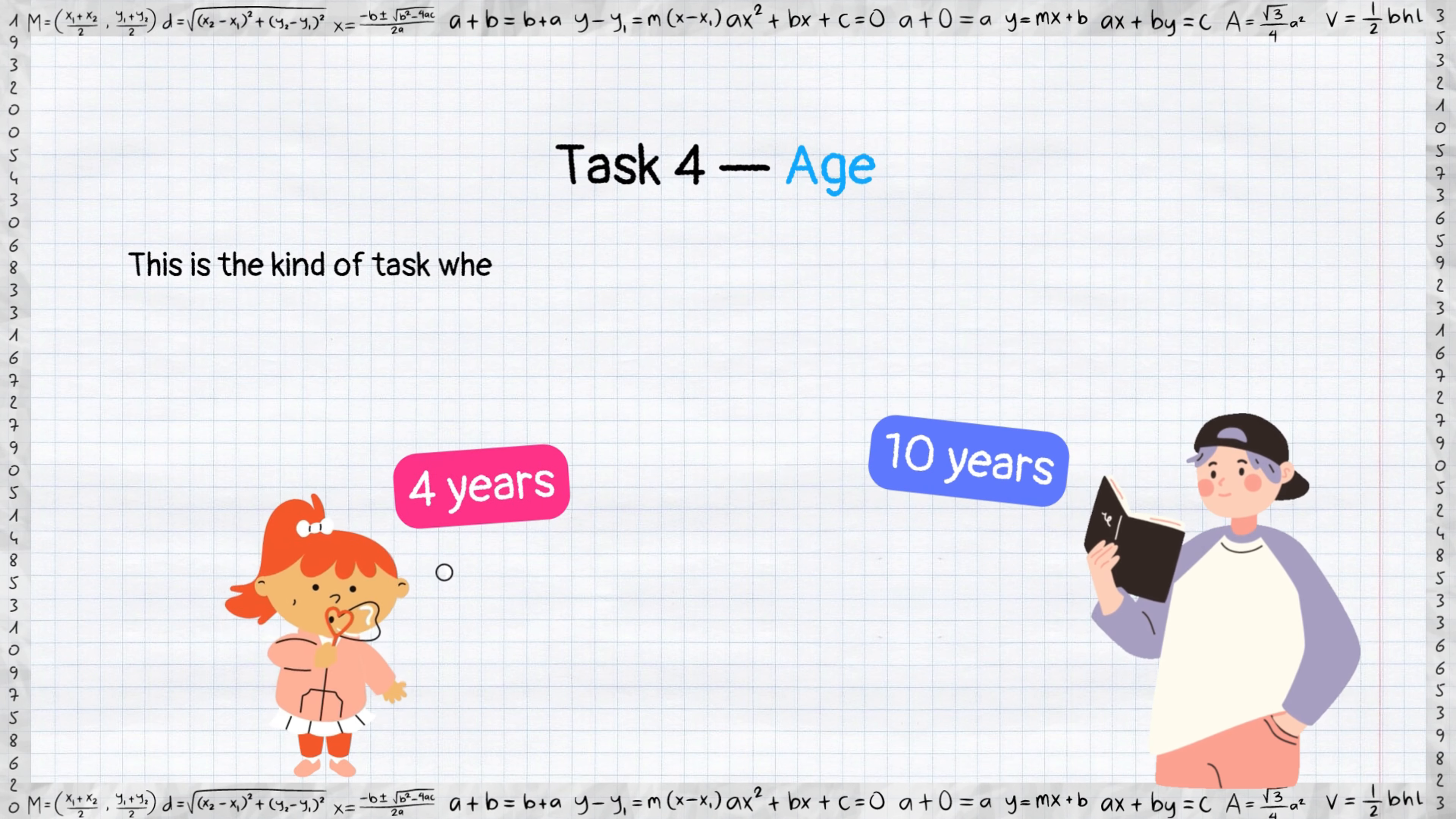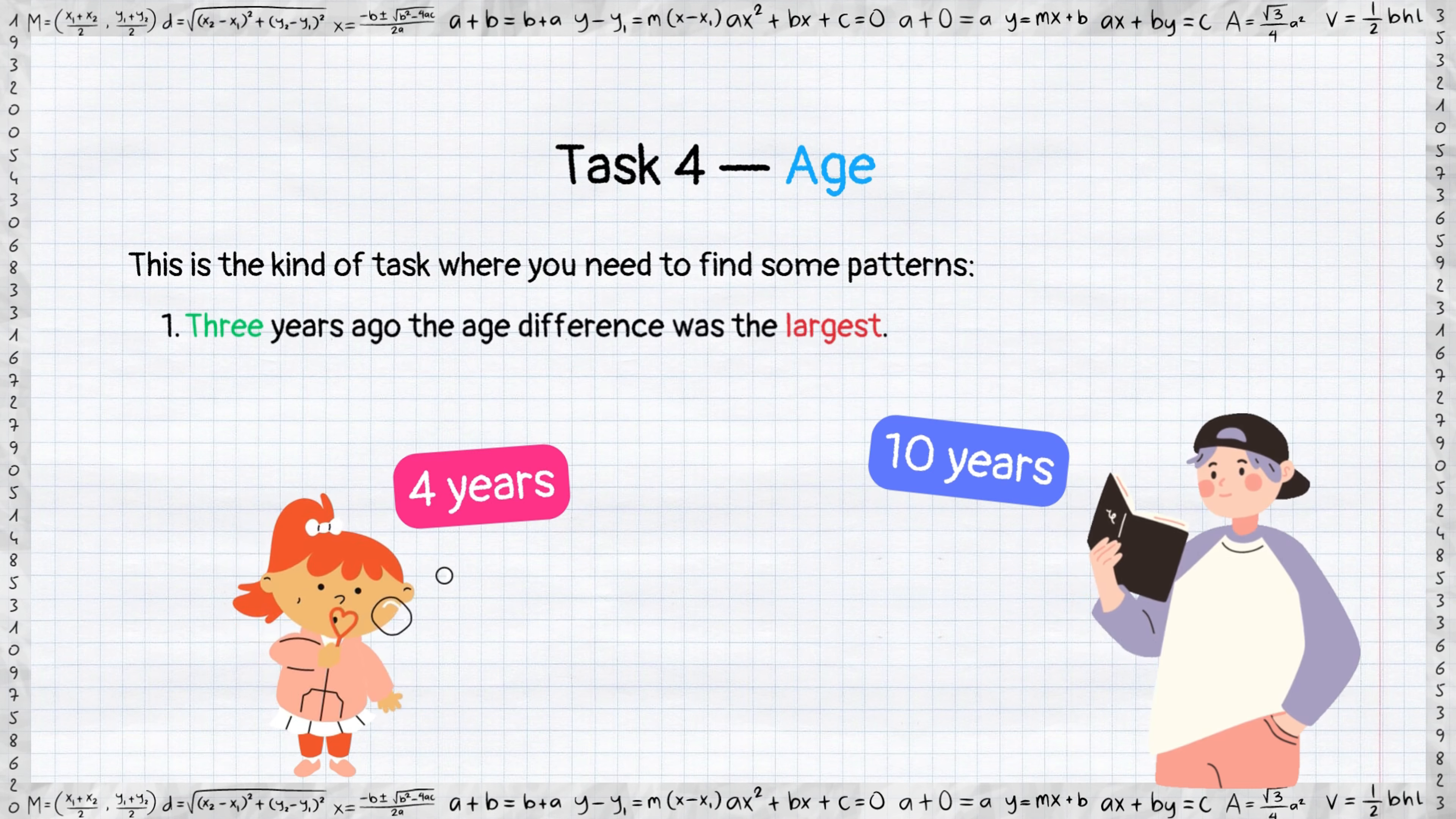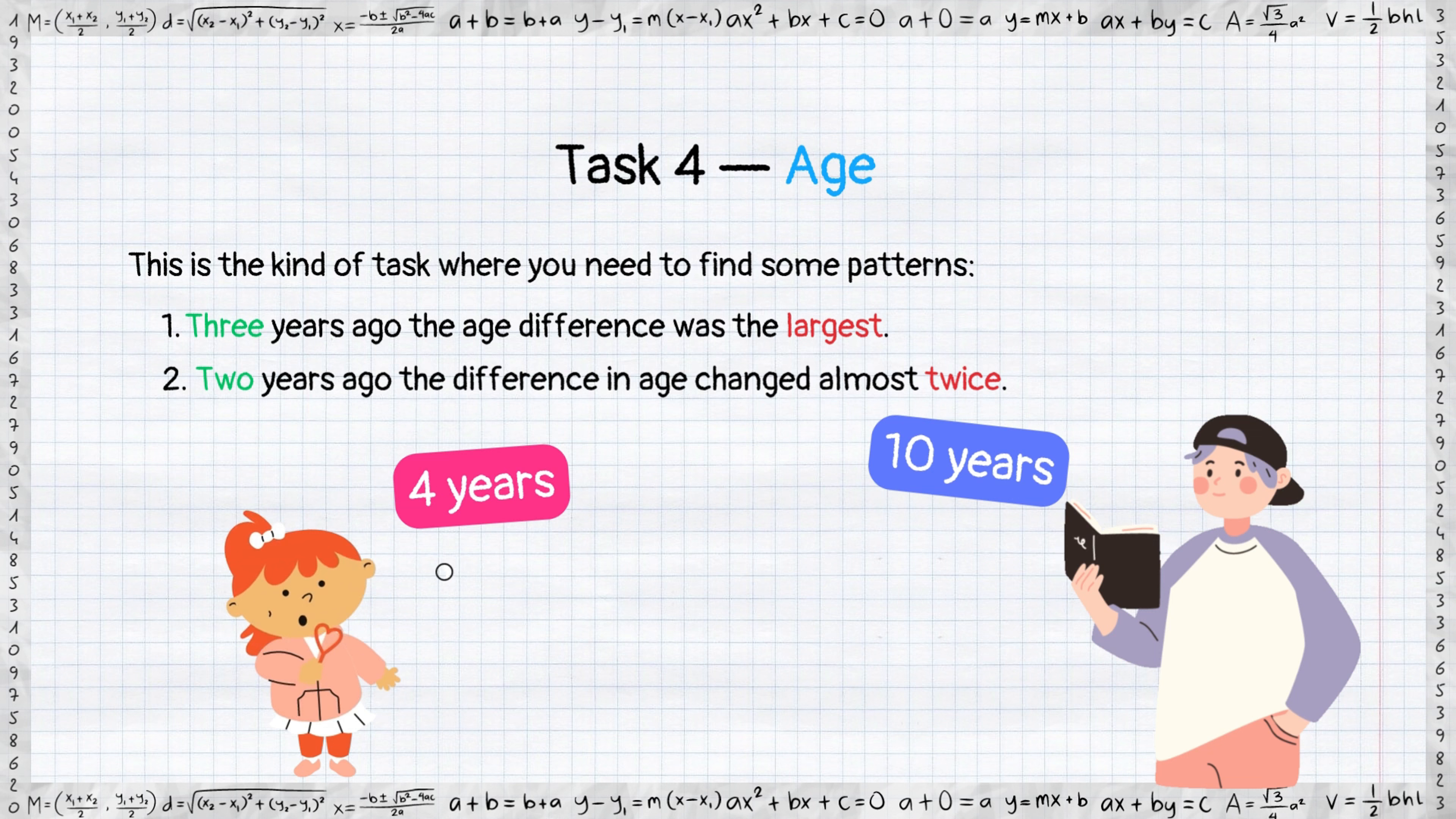This is the kind of task where you need to find some patterns. Firstly, 3 years ago the age difference was the largest. Secondly, 2 years ago the difference in the age changed almost twice. Knowing this fact, we can assume that 3 years ago the girl could have been only 1 year old, while the boy was 7.